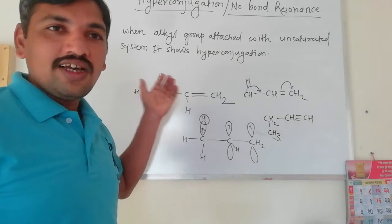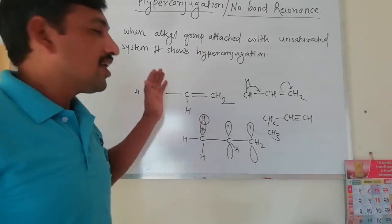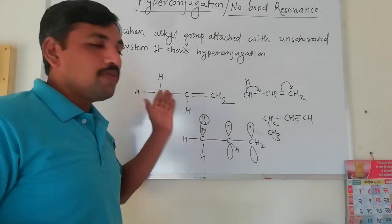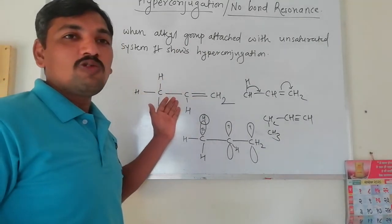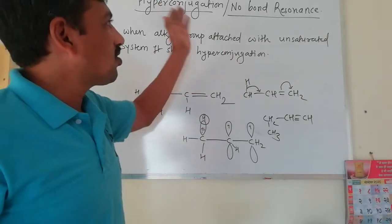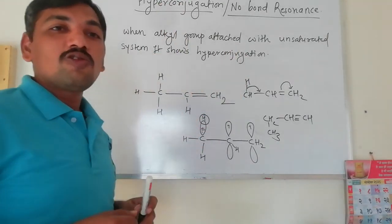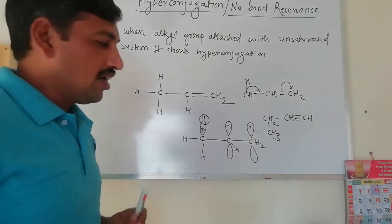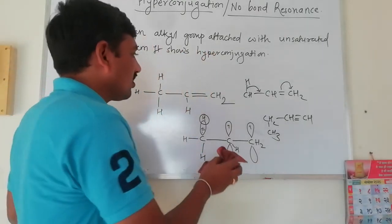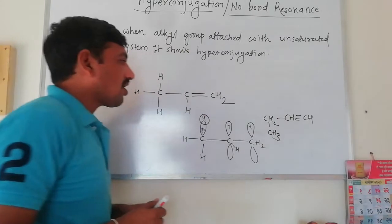Methyl and ethyl groups are electron donating groups due to the hyperconjugation effect. This is the hyperconjugation effect — alkyl groups act as electron donating groups.